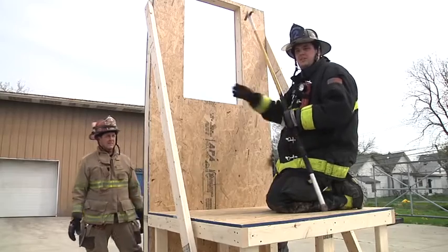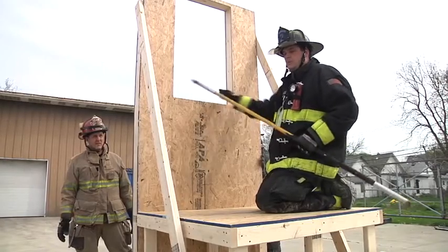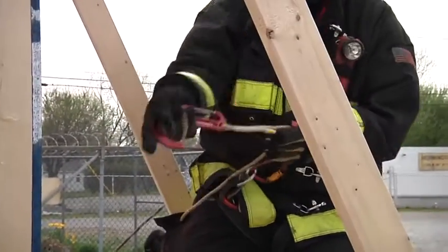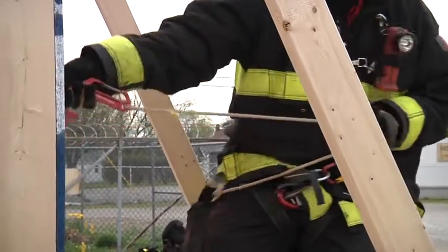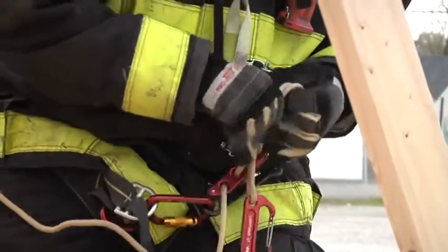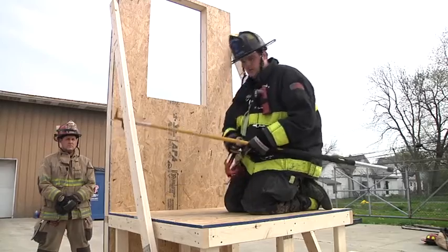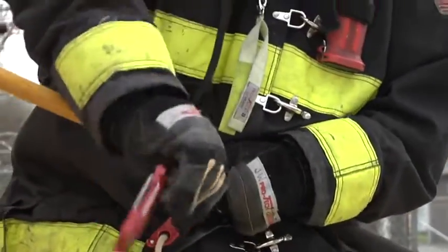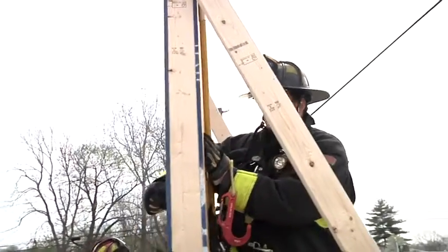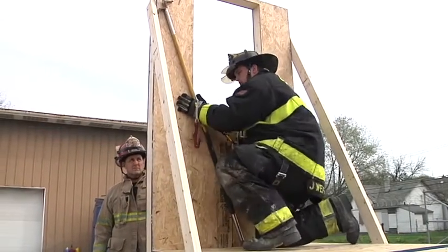Once the situation dictates I need to bail out of this window and I find a window, I'm going to clear the window with my hook, turning that window into as large an opening as possible. While staying low, I'm going to deploy my system, get enough slack to tie my clove hitch around my hook, slide it over the handle up to the middle of my tool, tension my tool, and place my hand and tool in the corner of the window. I want to make sure I have enough slack so my descent device clears the sill, and then I'm going to bail out.